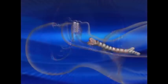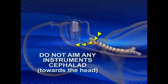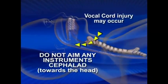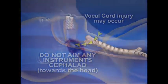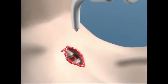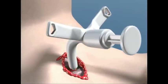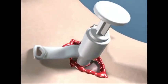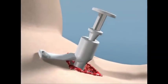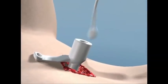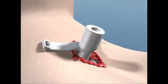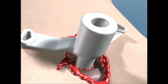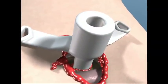It is very important not to aim any instrument cephalad towards the head, since injury to the vocal cords may occur. Insert the Shiley tracheostomy tube caudally through the incision and remove the beveled stylet. If a tracheostomy tube is not available, a number 6 endotracheal tube can also be used, and entrance may be facilitated by use of a stylet.